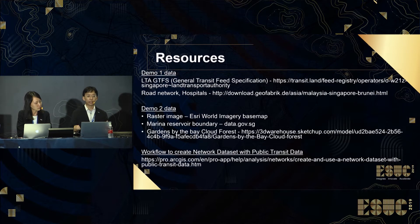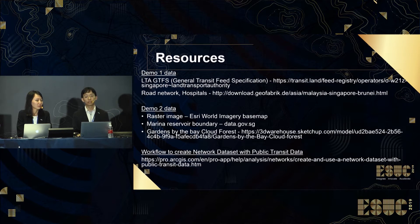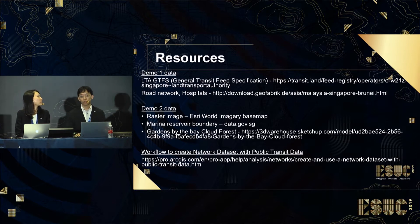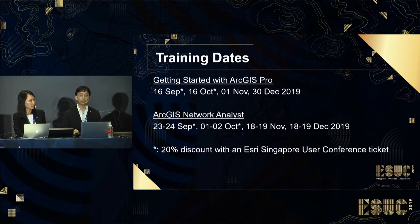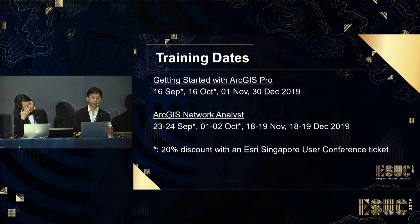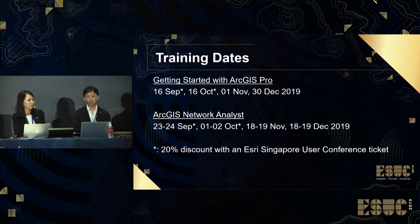Here are the links used to get the data for the demos. The last item at the bottom is the workflow followed to create a network data set with public transit data. Here are also the dates for the training courses relevant to this presentation. Please note that for the dates in September and October, you can get a 20% discount if you present your S3 User Conference ticket, so please keep your conference ticket beyond today.